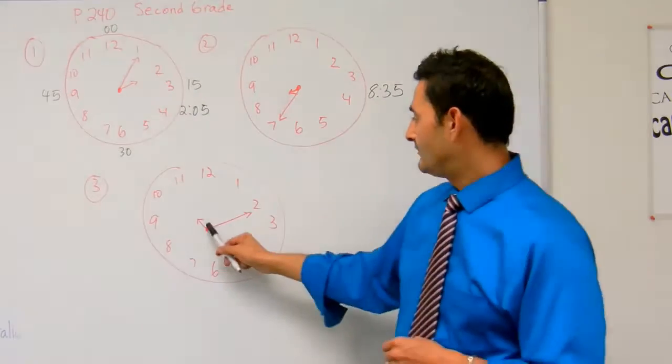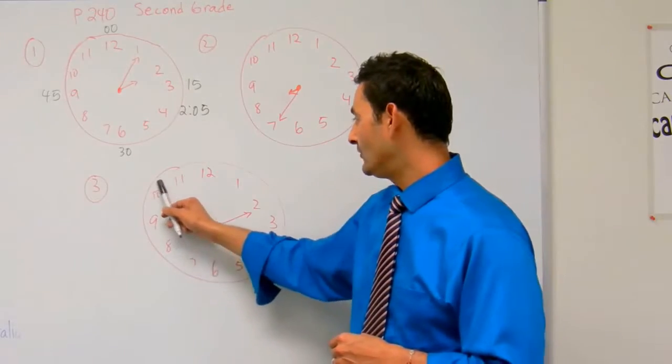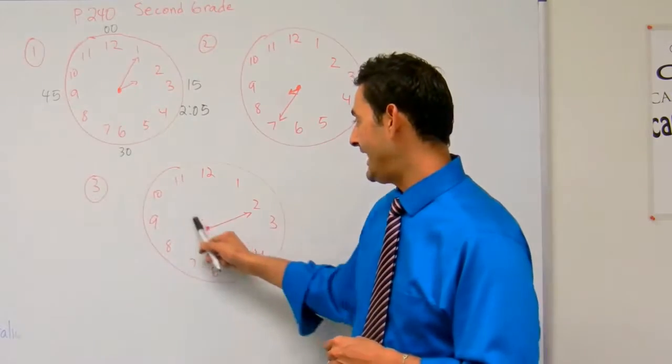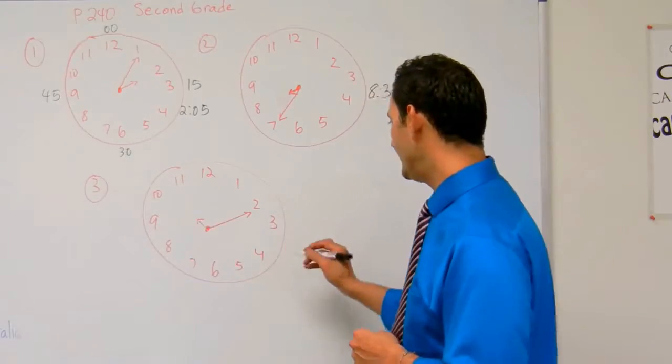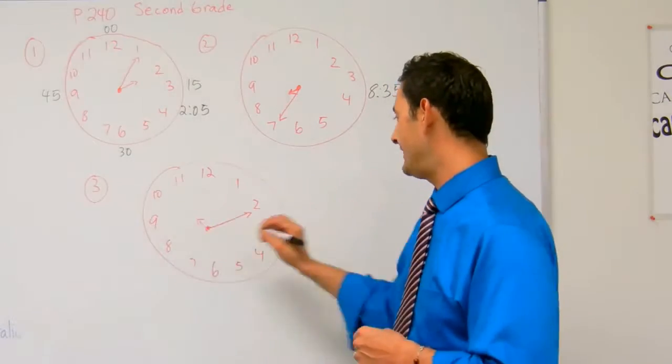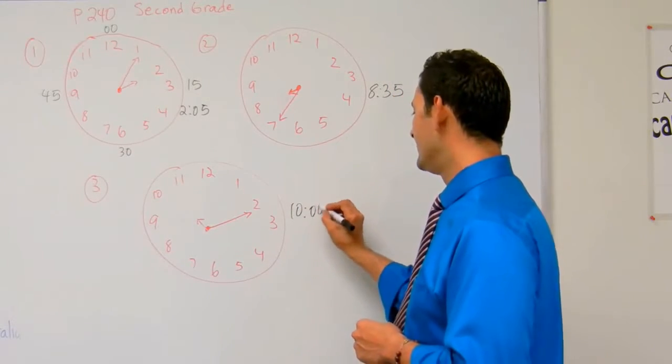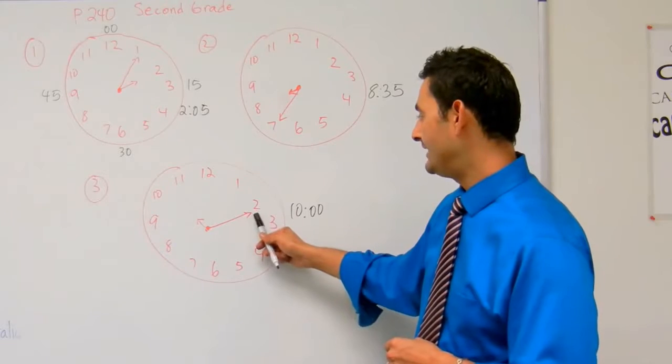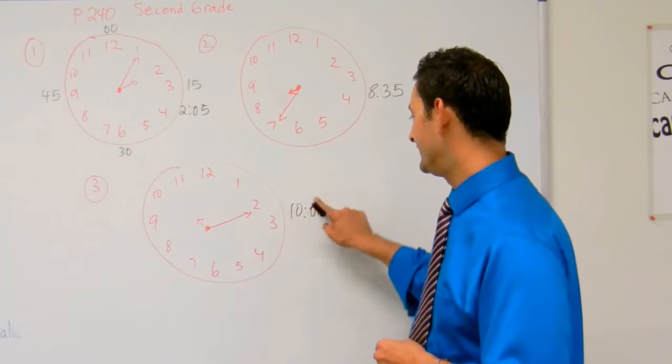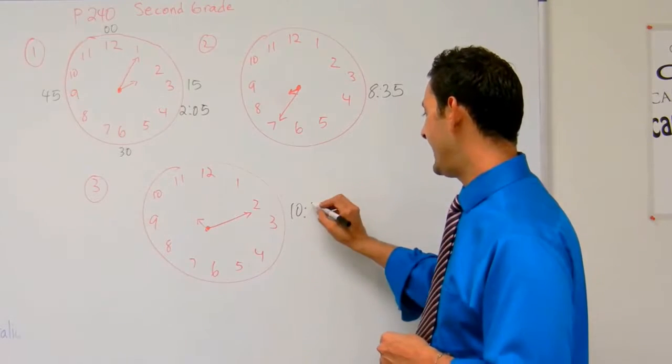Number three, the small hand, the hour hand is pointing close to the clock, I'm sorry, to the 10. It's past the 10 a little bit, it's not quite past the 11, so it's 10. And now let's count by fives. The minute hand is there. Five, 10, so it's going to be 10:10.